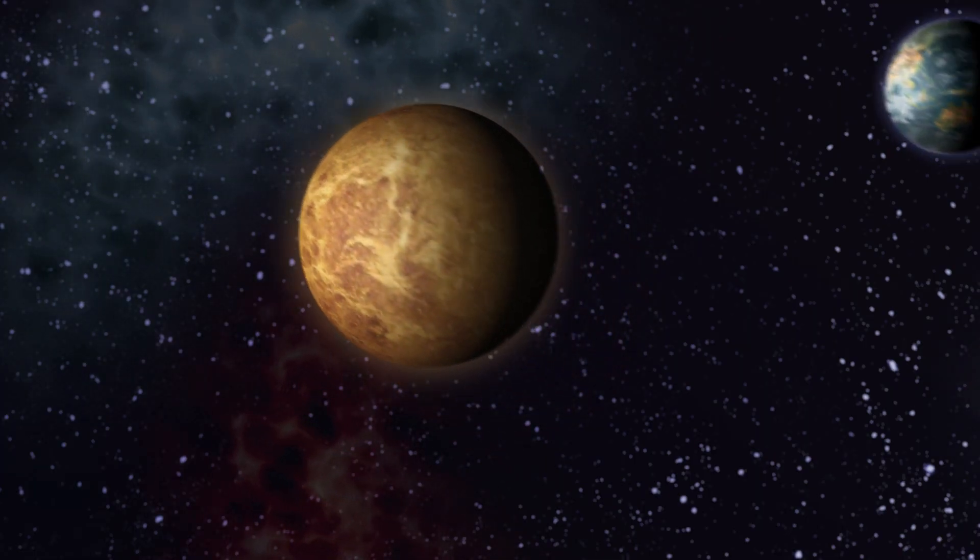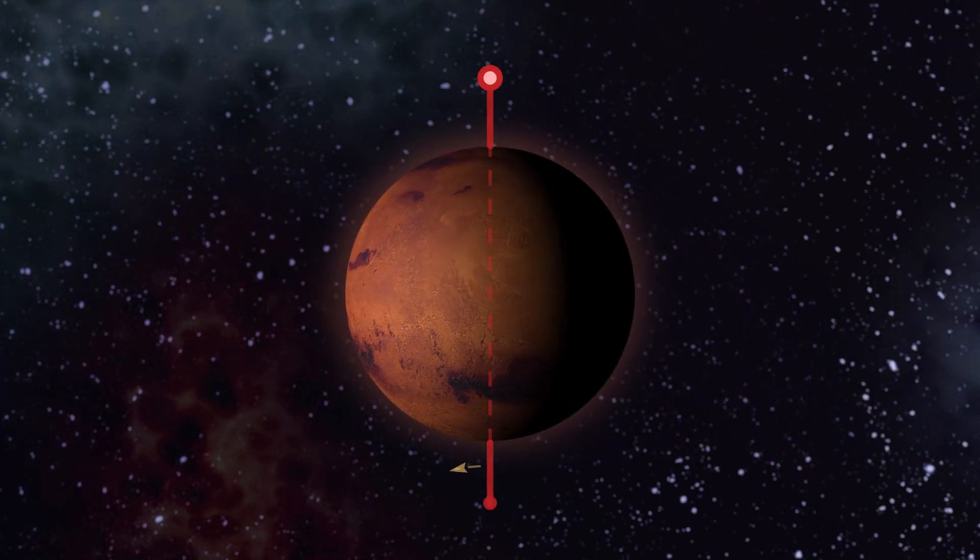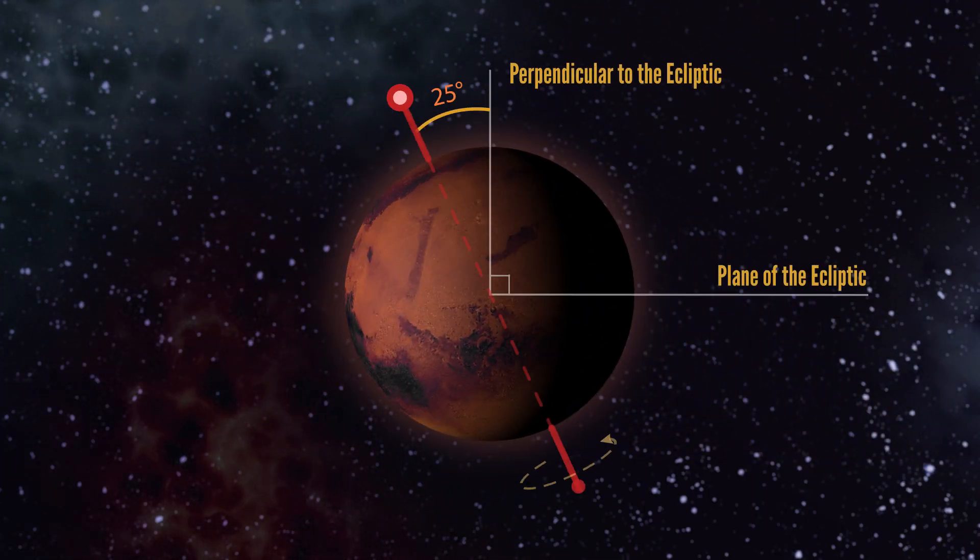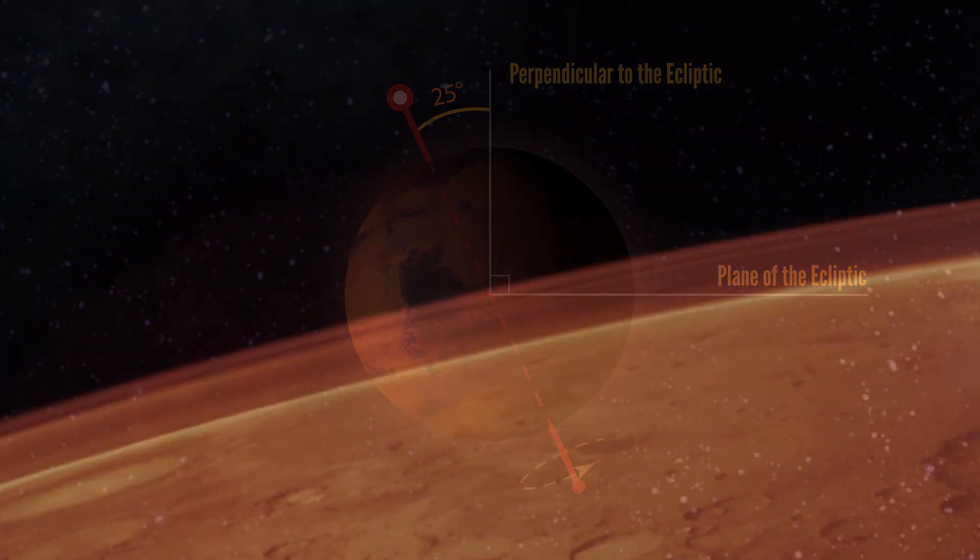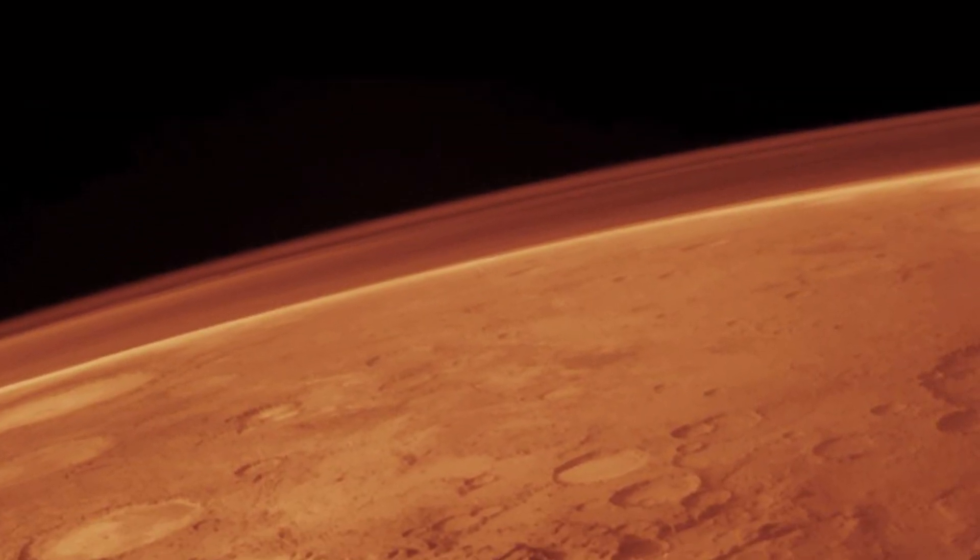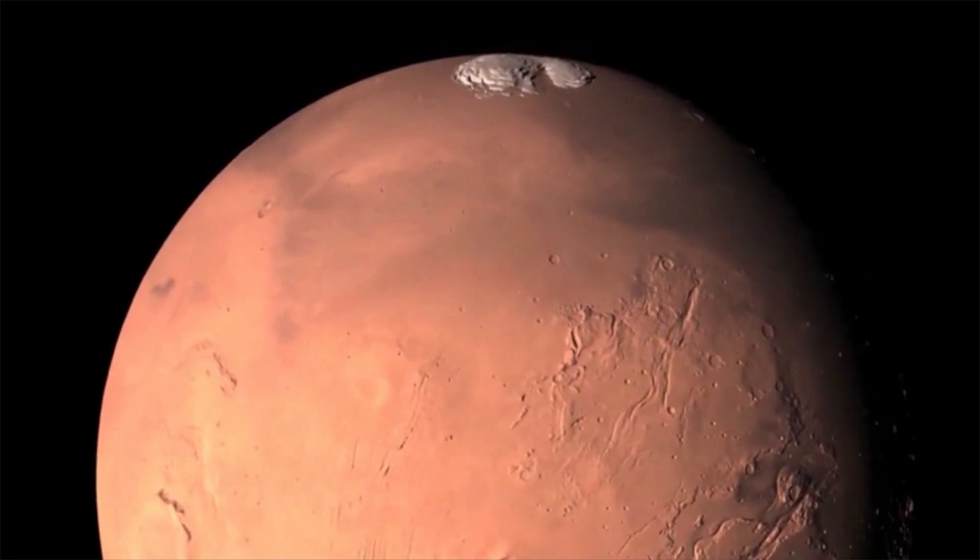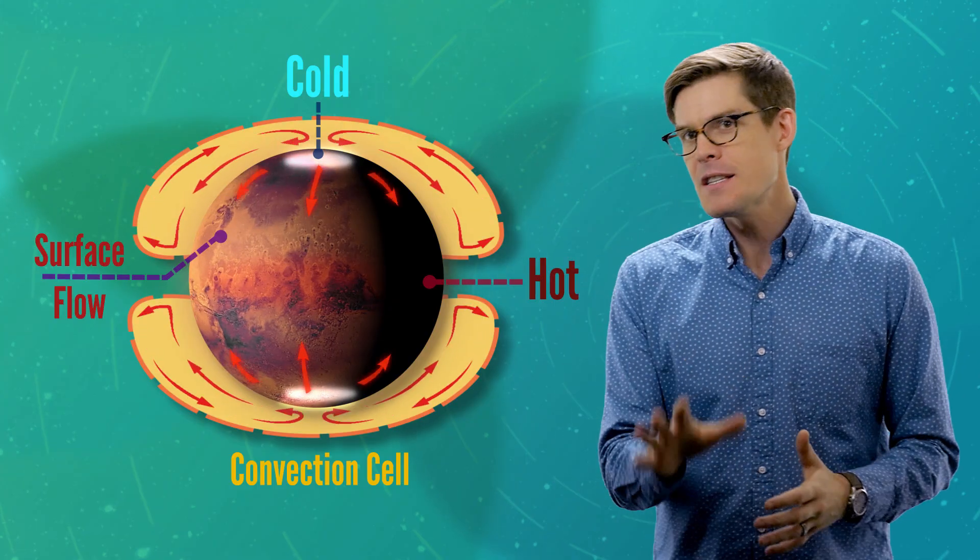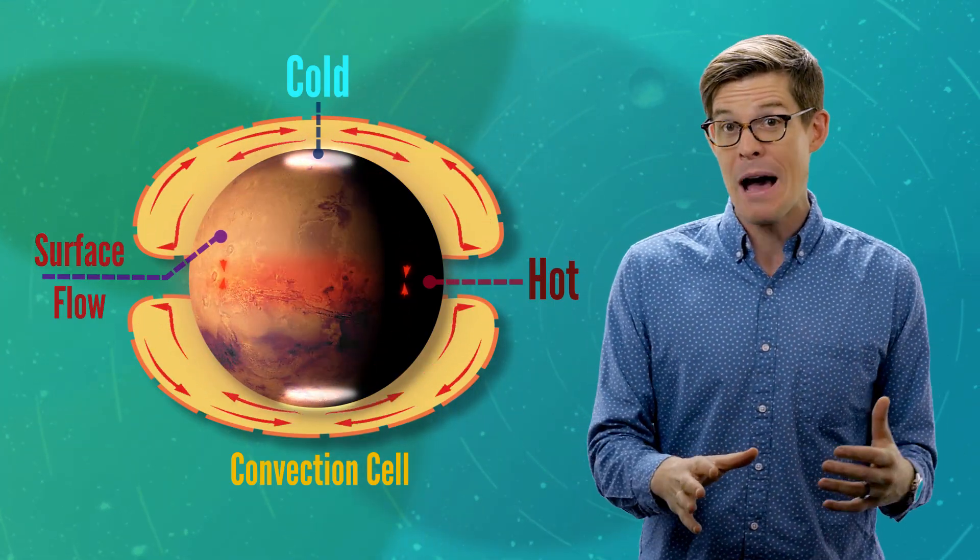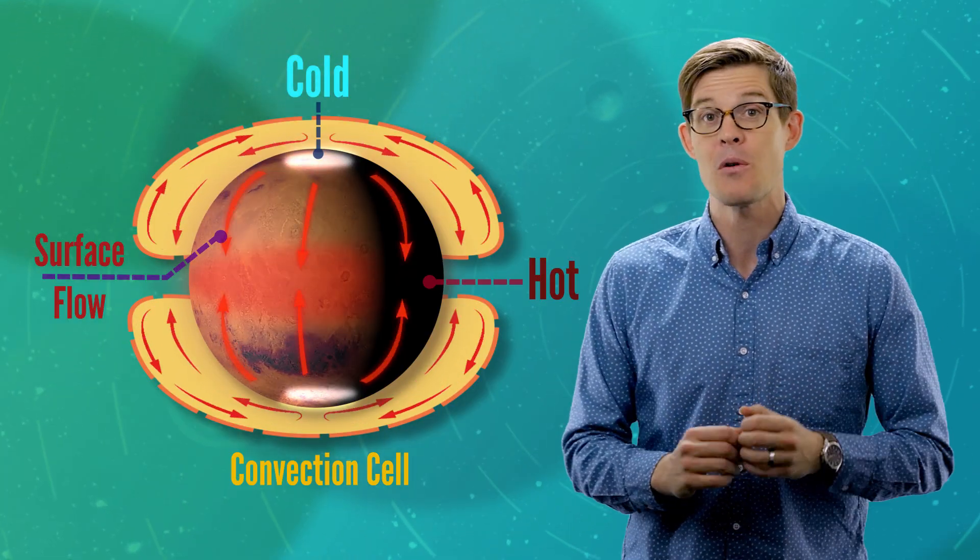Mars' tilt and distance from the sun give it the most Earth-like pattern of seasons. But at only a tenth the mass of Earth, the red planet's atmosphere is so thin that temperatures swing to extremes. Martian poles can get cold enough to freeze carbon dioxide straight out of the atmosphere, but these dry ice caps still grow and shrink with the seasons. As solid CO2 sublimates in summer, it powers 400 km per hour winds.